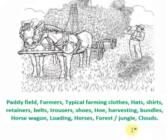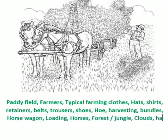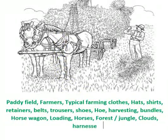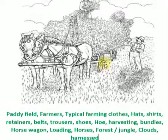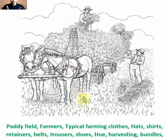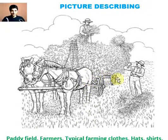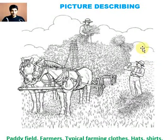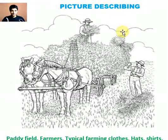We have one more vocabulary word: 'harnessed.' I can see two strong horses harnessed to the horse wagon. The farmer standing on the ground is using a hoe to load the bundles of rice onto the horse wagon. The second farmer is standing on the wagon and helping the first farmer. Behind the paddy field I can see a forest. In the sky there are a lot of white clouds. The day seems to be very bright and sunny.